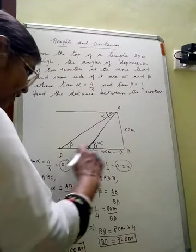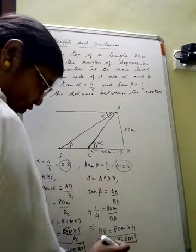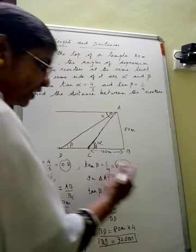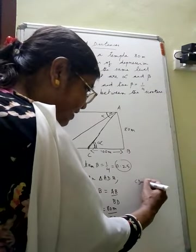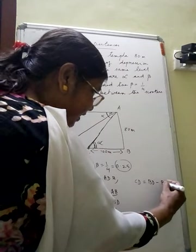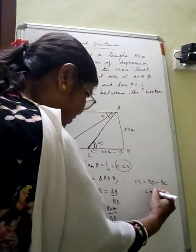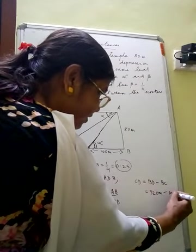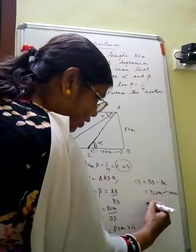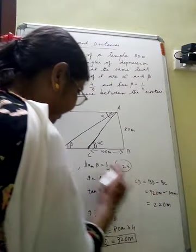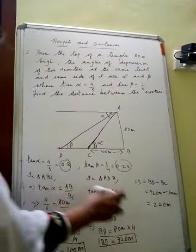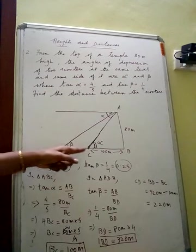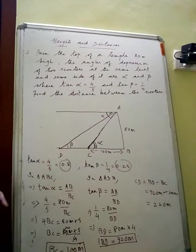The full length BD is 320 meters and BC is 100 meters. The distance between the two scooters is CD. So CD = BD − BC = 320 − 100 = 220 meters. Therefore, the distance between the two scooters is 220 meters, and CD denotes that distance.